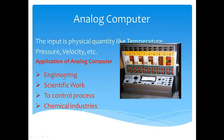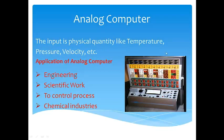Here you can see the diagram of a typical analog computer. This computer works on how much quantity — for example, when temperature goes beyond 30 degrees Celsius, or in chemical industries, or for scientific purposes. The analog computer works on physical quantities.